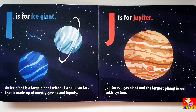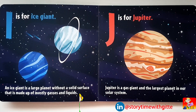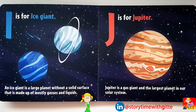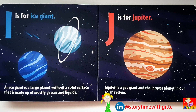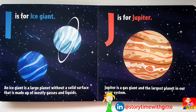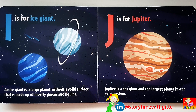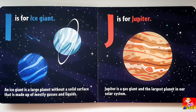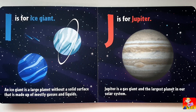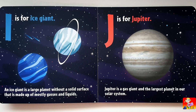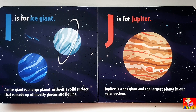I is for Ice Giant. An ice giant is a large planet without a solid surface that is made up of mostly gases and liquids. J is for Jupiter. Jupiter is a gas giant and the largest planet in our solar system.